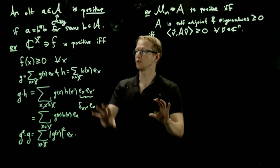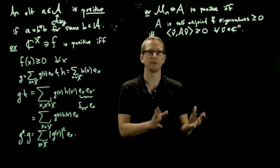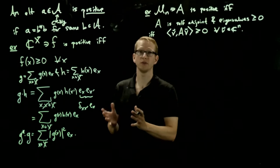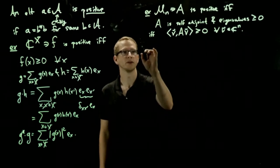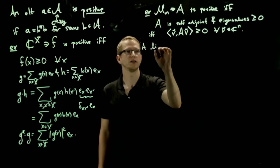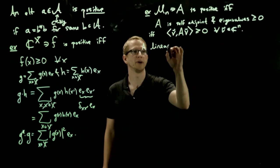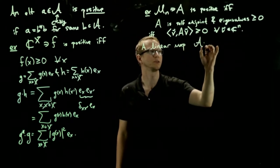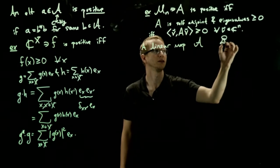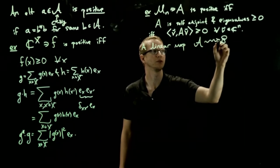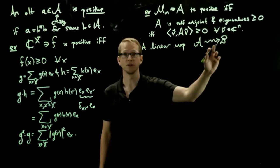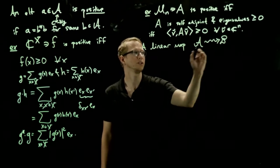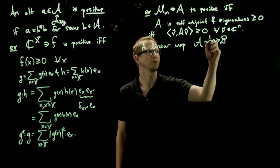Now, given this notion of positivity, we can ask for a map to not preserve all of the algebraic structure, but just to preserve this notion of positivity. So a linear map from two C star algebras, A to B, and this time I will use slightly different notation to distinguish it from the star homomorphisms we defined earlier. So a linear map, let's call this capital F,